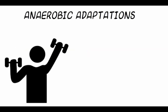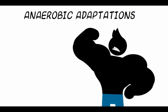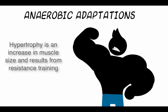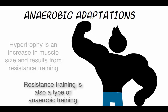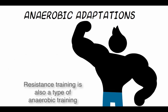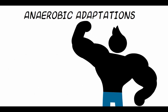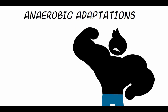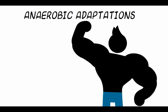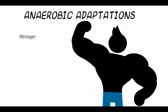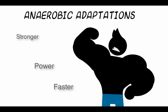Muscle hypertrophy is an increase in the cross section of the muscle — that is, the size of the muscle has increased. Muscle hypertrophy occurs more to type 2 fast twitch muscle fibres than to type 1, and therefore greater hypertrophy occurs from resistance training than aerobic training. Muscle hypertrophy results from an increase in muscle fibres and means the athlete becomes stronger, more powerful, and often faster as a result.